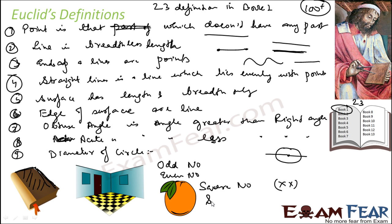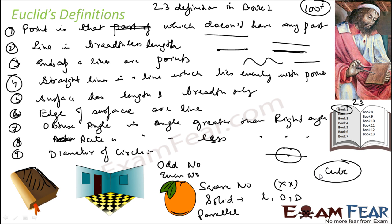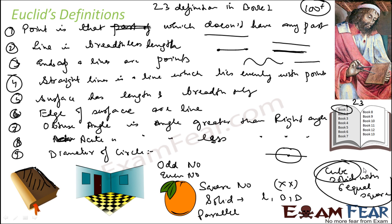He defined solid: a solid is something which has length, breadth, and depth. He defined parallel lines as lines which don't meet. He defined cube: a cube is a solid figure that contains 6 equal squares. So all these definitions were given by Euclid.